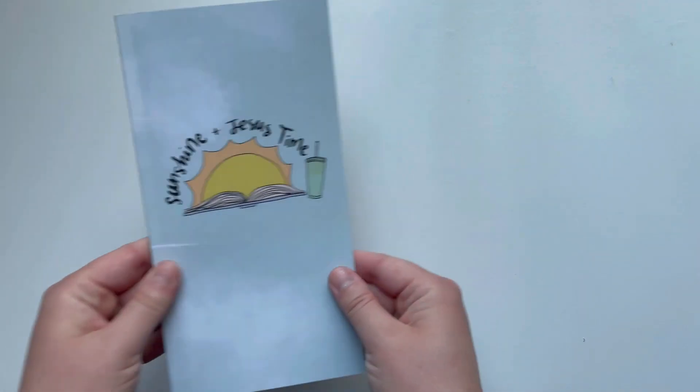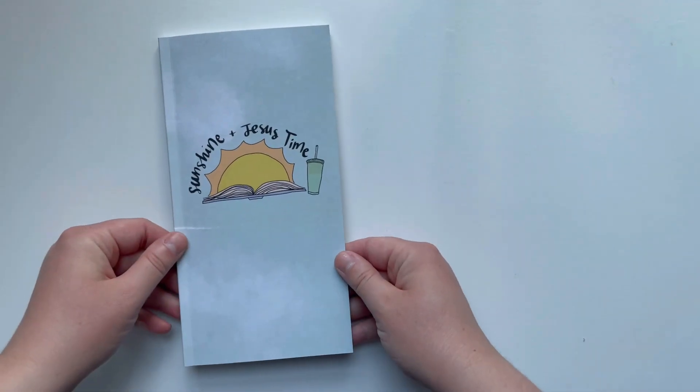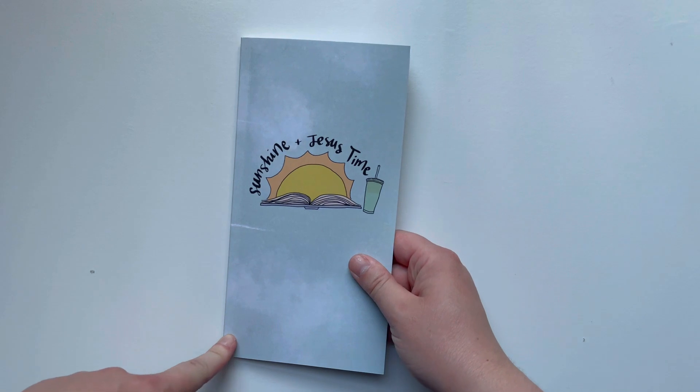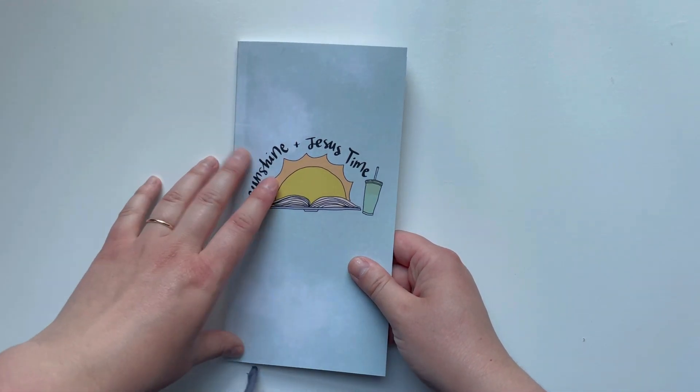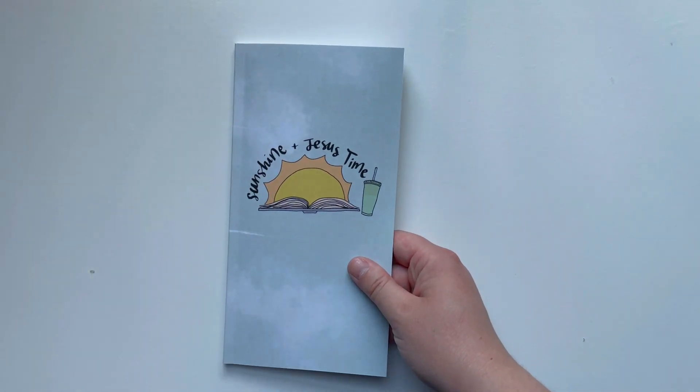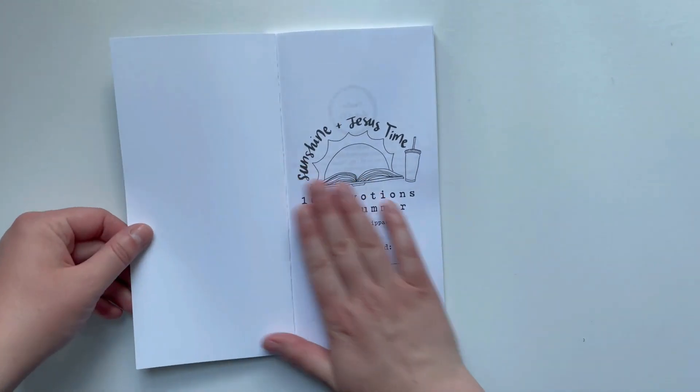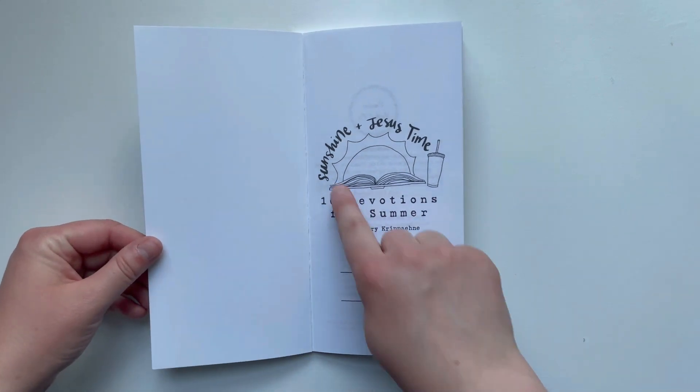It is a traveler's notebook size, so it will fit in a standard traveler's notebook, and it comes bound. You can always cut off the spine and use a hole punch or add a spiral to it. And here's the back.